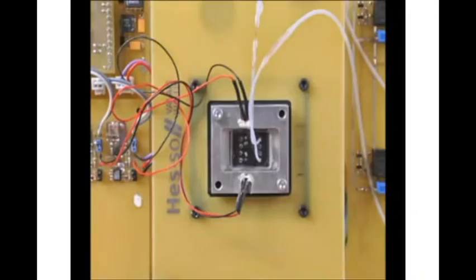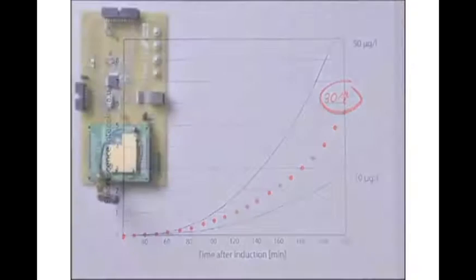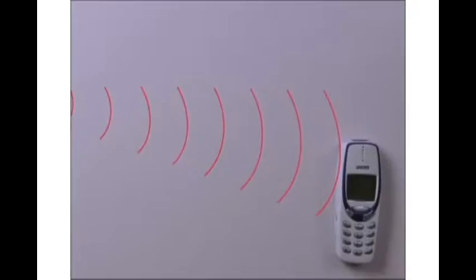The amount of GFP is a function of time and arsenic concentration. This is done by exciting the GFP with blue light and measuring the green fluorescent light after blocking the blue excitation light with an optical filter. Repeating these measurements every five minutes allows calculation of the arsenic concentration. The results are sent via a GSM module to a mobile phone.